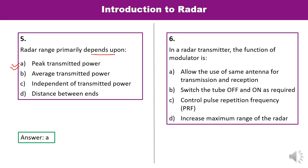Question 6: In a radar transmitter, the function of the modulator is? Options include: allow use of the same antenna, switch the tube off and on, control pulse repetition frequency, and increase maximum range. The function of the modulator in the transmitter is to switch the tube on and off whenever required. So B is the correct answer.